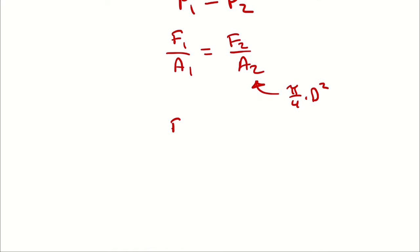So, therefore, I can say F1 over pi over 4 times diameter 1 squared is equal to F2 over pi over 4 times diameter 2 squared.